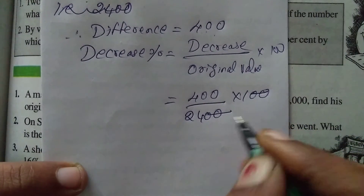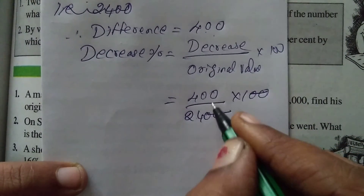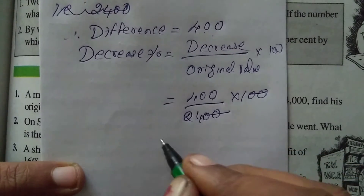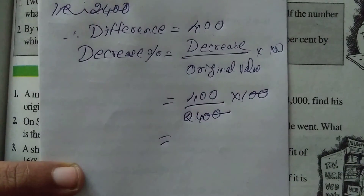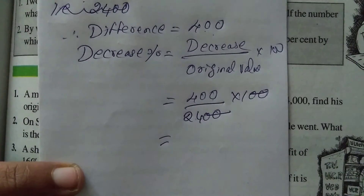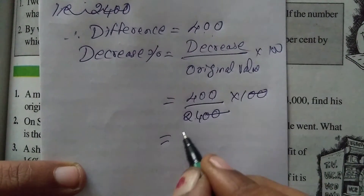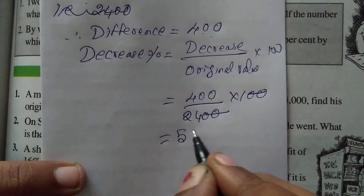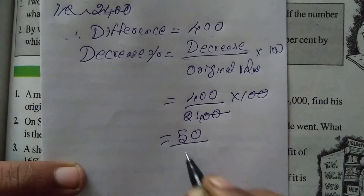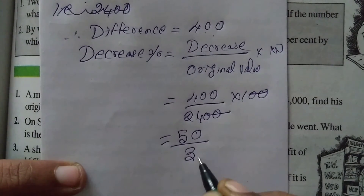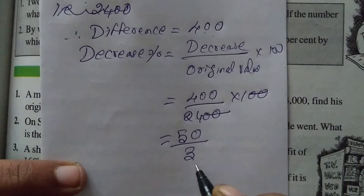Two zeros get cancelled. For 24 and 400, we take the 8 table: 8 fives are 40 and 8 threes are 24. So decrease percentage is 50/3 percent.